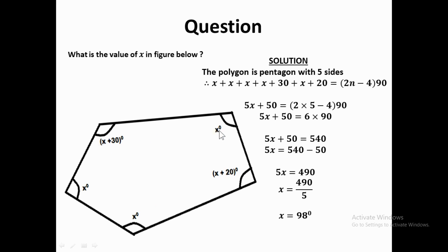Now, looking at this polygon, you should be able to tell the name of it. It is a pentagon because it has five sides. We are also given angles inside the polygon — these are interior angles because they are inside the polygon. So if you sum all five interior angles together, that should equal the formula for the sum of interior angles of a polygon, which is (2n minus 4) multiplied by 90, where n equals 5 for a pentagon.